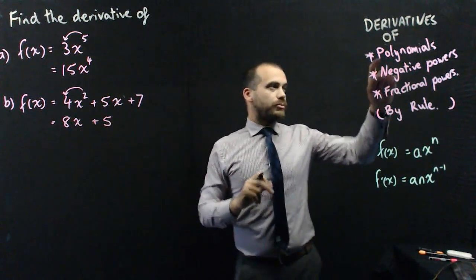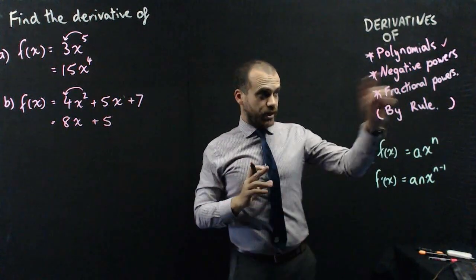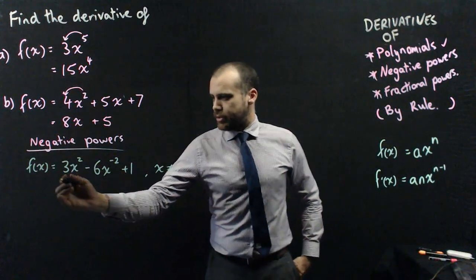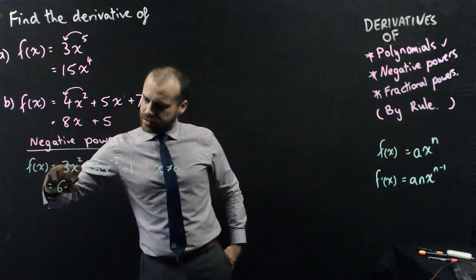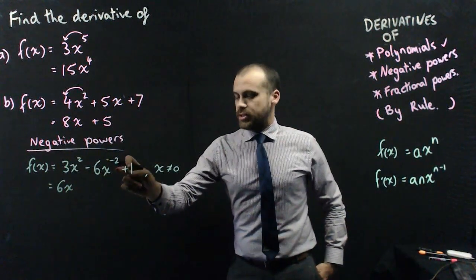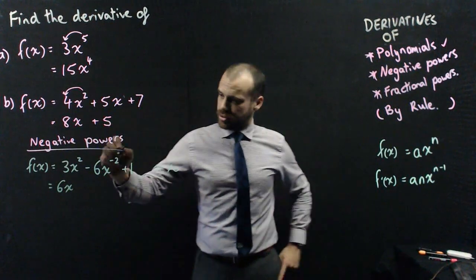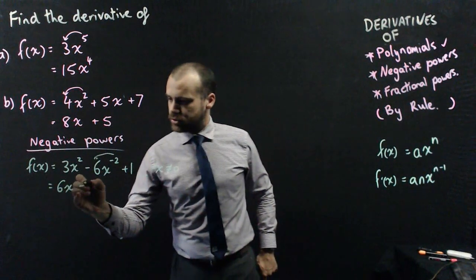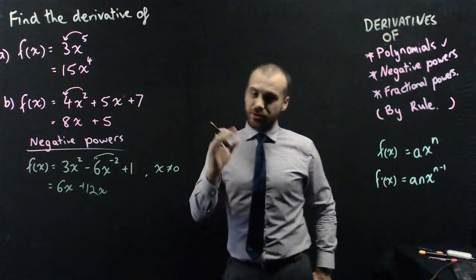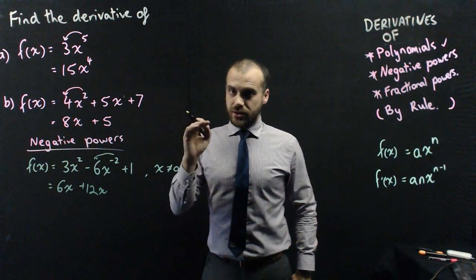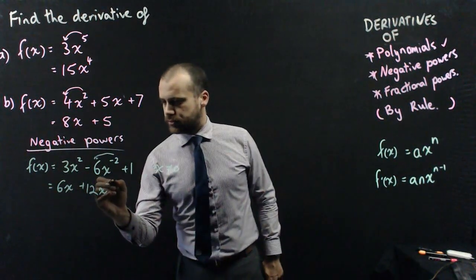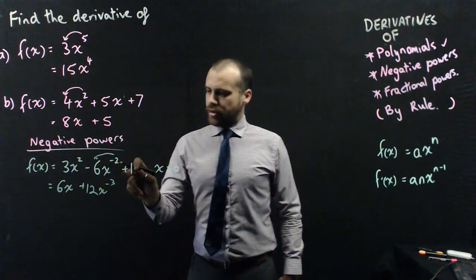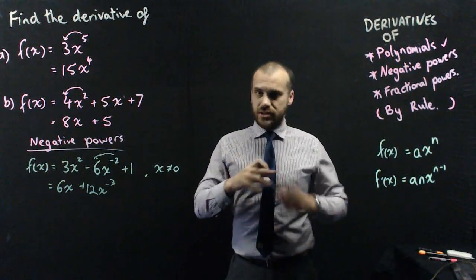Now that's really the polynomials. You should have done those before in the past. Negative powers, fractional powers. So a quick example here. 3x squared, that's nothing we haven't seen before. Negative 6x to the negative 2. Same rules all apply. So the negative 2 can come out here. Negative 6 times negative 2 will make positive 12. And then we decrease the power by 1. So negative 2 minus 1 becomes negative 3. So f of x equals 6x plus 12x to the negative 3. And then that plus 1, that's a constant. Derivative of a constant is 0. It disappears.